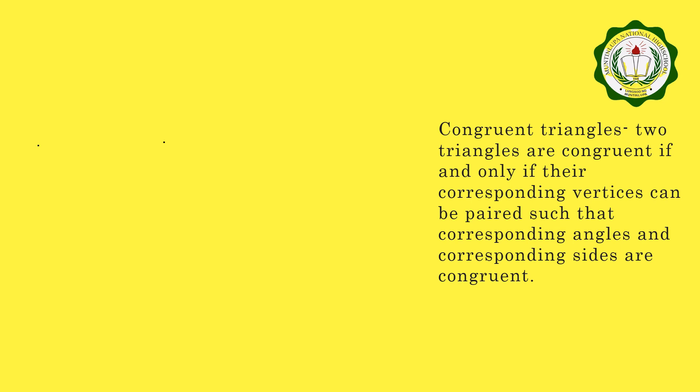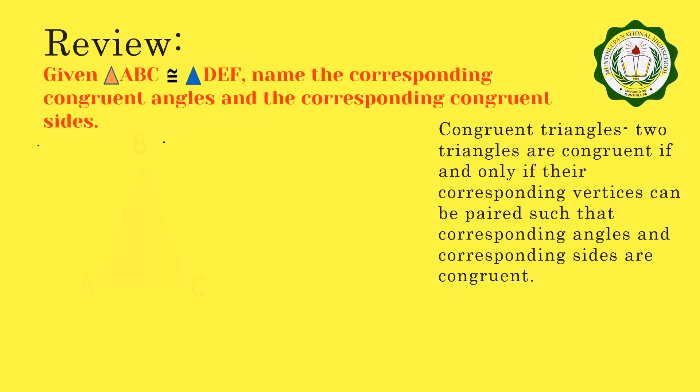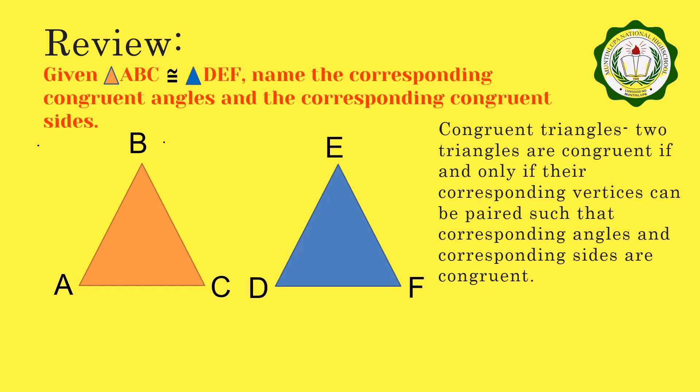We know that two triangles are congruent if their vertices can be paired such that corresponding angles and corresponding sides are congruent. So, let us recall — you are given triangle ABC congruent to triangle DEM. What you will do is to name the corresponding congruent parts.